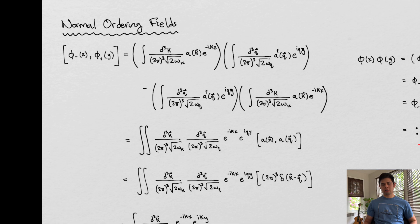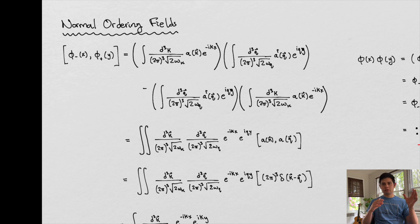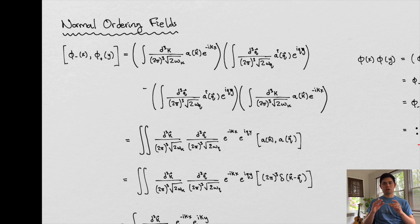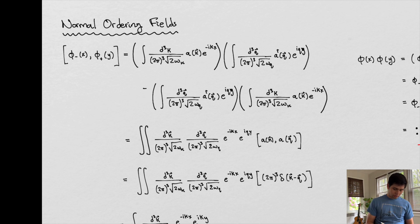Normal ordering basically means that our fields contain creation and annihilation operators. The idea is that we're going to split up the fields so that we have the part represented in terms of the creation operators and the other part containing the annihilation operators. We've seen that the creation and annihilation operators are the weights on different waves that satisfy the Schrödinger equation. This here is part of the solution to our quantum scalar field — the part that has e to the minus ikx in it.